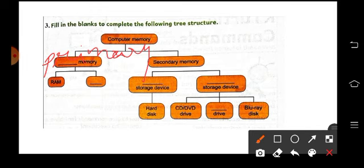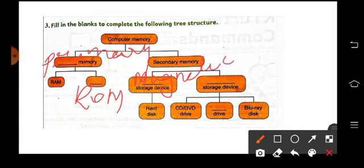Then primary memory again it is divided into RAM and ROM. Storage devices, magnetic. Yes, here comes magnetic storage device and optical storage device. O-P-T-I-C-A-L, optical.